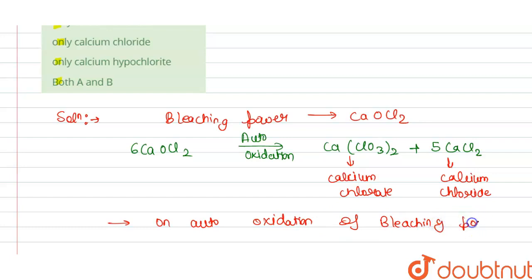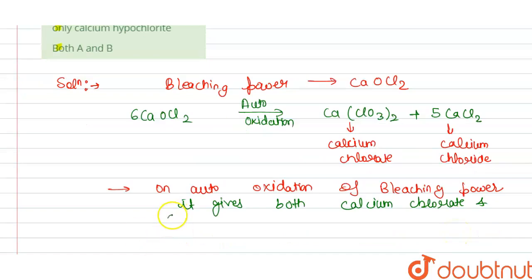Bleaching powder gives both calcium chlorate and calcium chloride.